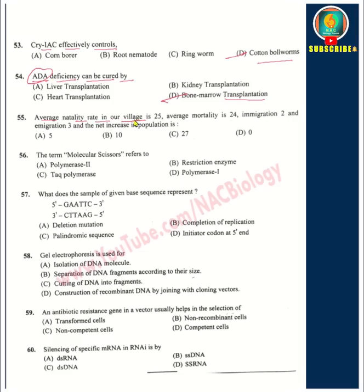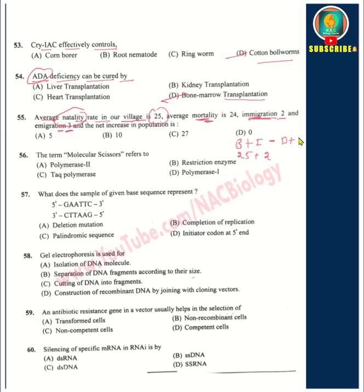Question 54: Calculate the average natality rate in a village. The formula involves birth rate plus immigration minus emigration and mortality. Adding births (24) plus immigration (3) equals 27; subtracting deaths (24) plus emigrants (3) equals 27; the net average rate comes out to zero.